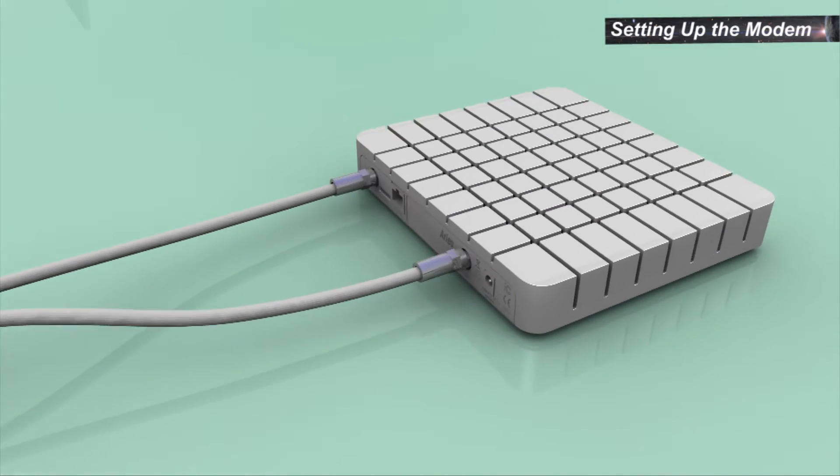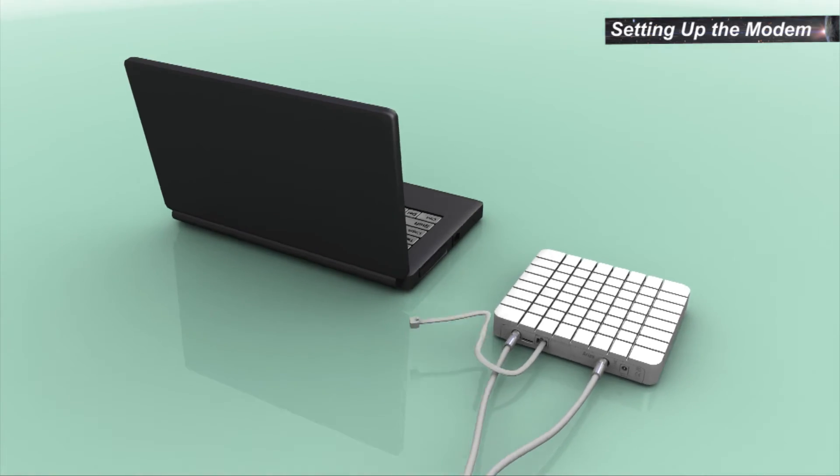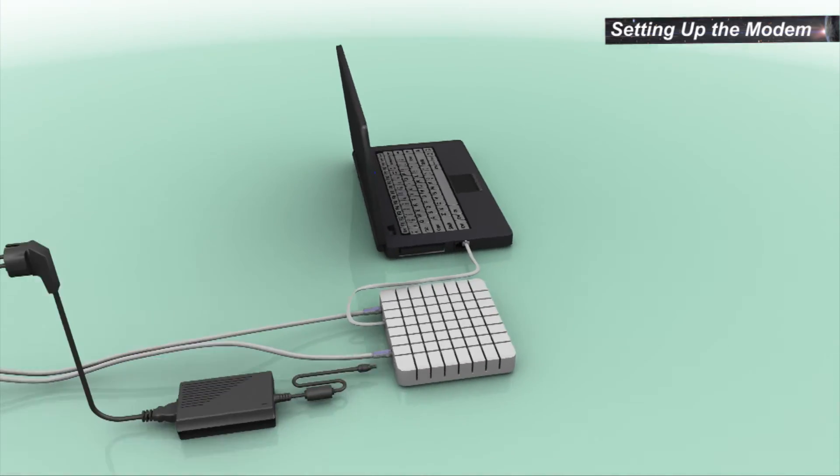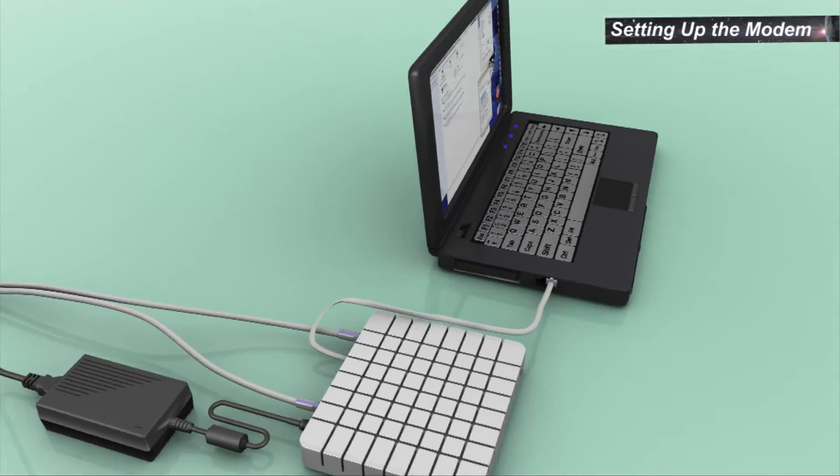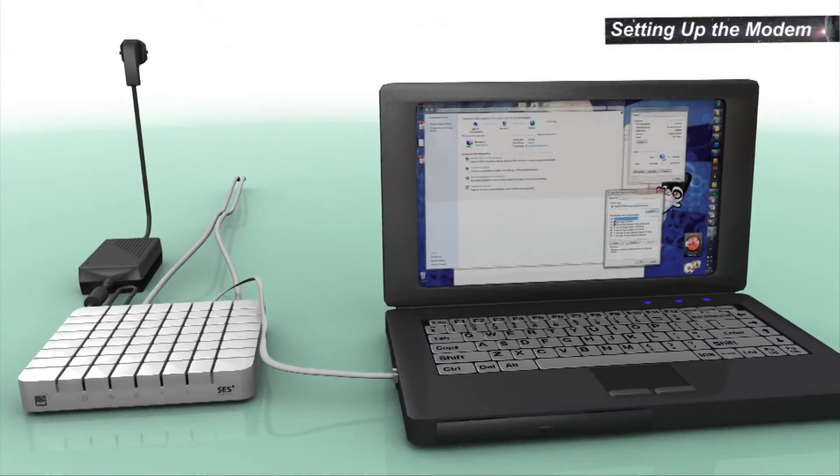Connect the RF cables to the modem. Connect to the computer using the LAN cable. Connect the power supply and power up. Configure the computer LAN port as instructed in the user guide.